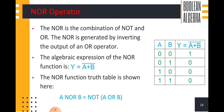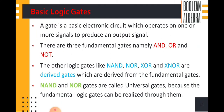We can express this as: A NOR B is equal to NOT of A OR B. Now we look at the basic logic gates. A gate is a basic electronic circuit which operates on one or more signals to produce an output signal.